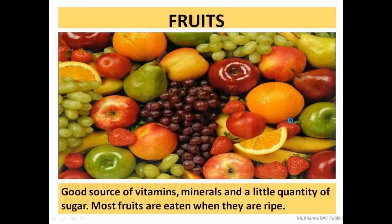The next category is fruits. These fruits we are getting from plants. They are a rich source of vitamins and minerals, and they provide a little quantity of sugar. Most fruits are eaten when they are ripe — they become juicy and delicious.